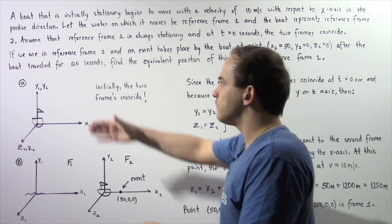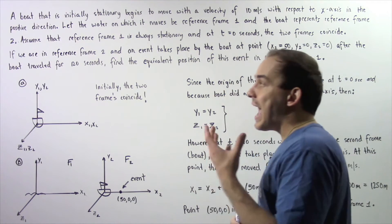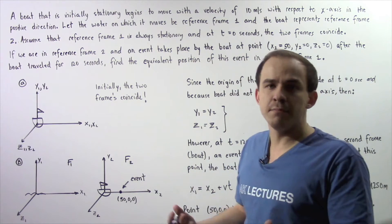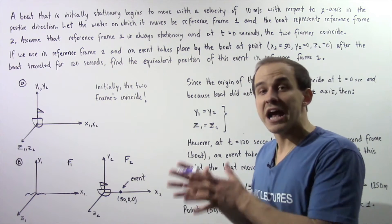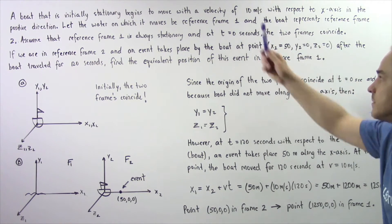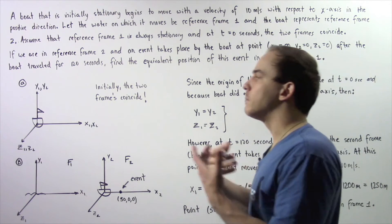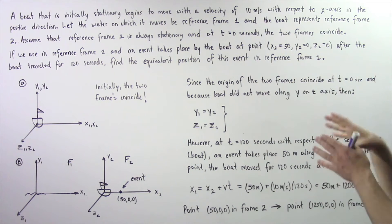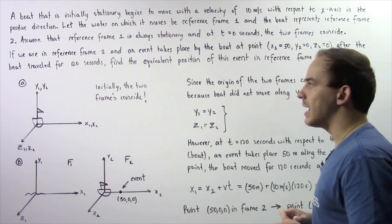The boat traveled for 120 seconds in the positive direction along the x-axis. At that point in time, a person on the boat witnesses some event. For example, let's suppose the person sees a whale right by the boat, and that whale is found at this exact coordinate position with respect to reference frame F2, the boat. We basically want to transform this coordinate position from the boat's frame to the water's frame.